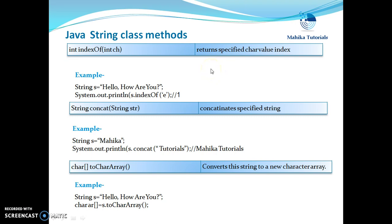The first method we are going to see is indexOf. This method returns the index of the specified char value. Suppose if we have a string s with the content 'hello how are you' and if we say print s.indexOf('e'), it is going to print the index value for the first occurrence of 'e' in string s. The first occurrence of 'e' is at index 1 because 'h' is at index 0.